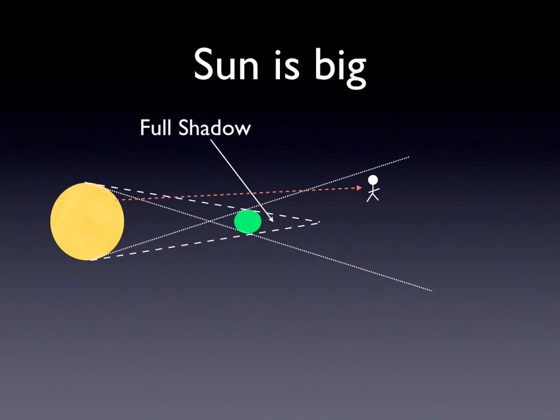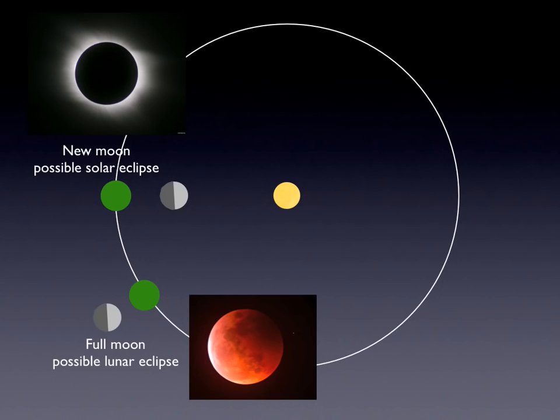Then take lines from the bottom of the Sun to the top of the Earth and vice versa — this creates a partial shadow region. A person in that region can't see the bottom of the Sun but can see the top, so the Earth is only partially blocking it. This is really important for solar eclipses: when the moon creates a full shadow, the region that falls on the Earth is actually very small, so very few people see a total solar eclipse. But the partial shadow region is much larger, giving many more people a partial eclipse.